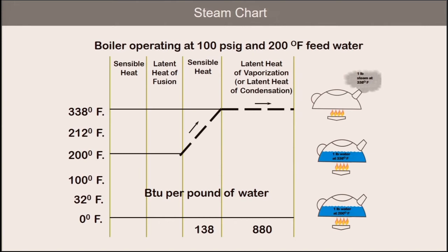Let me show you with this steam chart what I mean. Note we have a boiler operating at 100 PSIG, and the temperature of the feed water is 200 degrees, and the saturation or boiling point at 100 PSIG is 338 degrees Fahrenheit. This means I have to add 138 BTUs to each pound of water to raise the temperature to 338 degrees — one pound of water, one BTU, one degree, because the specific heat of water is 1. Now, once at 338 degrees the water is saturated, and if we want steam at 338 degrees, we need to add 880 BTUs to each pound of water in the boiler. Once we've done that, we now have steam at 338 degrees because we added the 880 BTUs of latent energy.